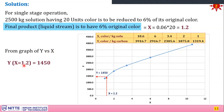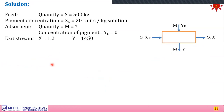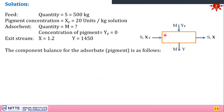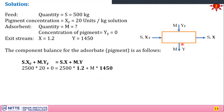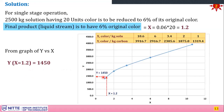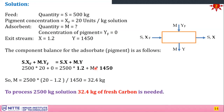Using the material balance equation — S·xf + m·yf = S·x + m·y — with S = 2500 kg solution, xf = 20, yf = 0 (fresh carbon), x = 1.2, and y = 1450, the only unknown is m (mass of adsorbent). Solving: 2500×20 + 0 = 2500×1.2 + m×1450, giving m = 32.4 kg. This means 32.4 kg of fresh carbon is required to process 2500 kg of the sugar solution. That concludes both problems.